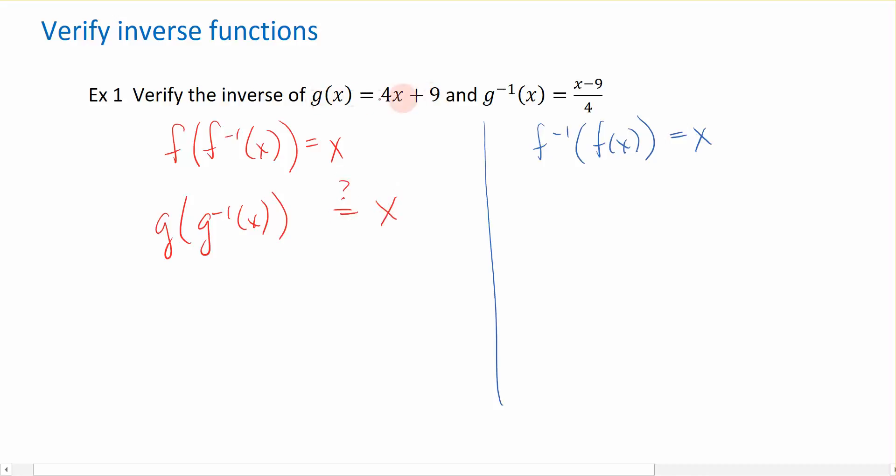So I take the function g of x, which looks like 4 times something plus 9. And inside of this set of parentheses right here, I'm going to replace it with g inverse of x, because I'm evaluating g at g inverse.